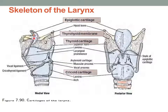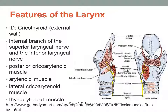We have the epiglottic cartilage in the medial view and the posterior view. Then you have the thyroid cartilage, which has several components: superior horn, lamina, laryngeal prominence, and then additional cartilages — your arytenoid cartilage and your cricoid cartilage. Using our models, you should be able to identify the following features of the larynx: the internal branch of the superior laryngeal nerve and the inferior laryngeal nerve, the posterior cricoarytenoid muscle, the arytenoid muscle which has both a transverse and oblique part, the lateral cricoarytenoid muscle, and the thyroarytenoid muscle.